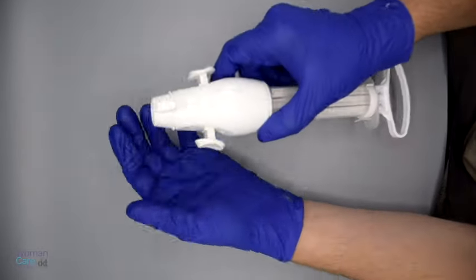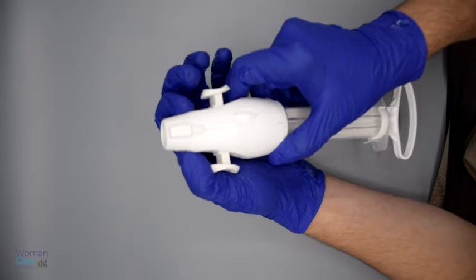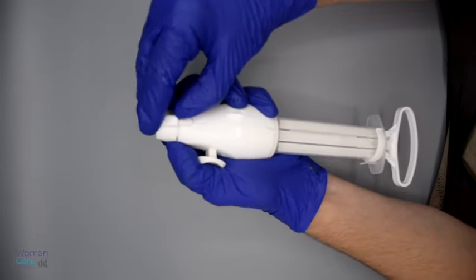Remove the valve cap by pressing down on the tabs of each side with one hand and removing the cap with the other hand.